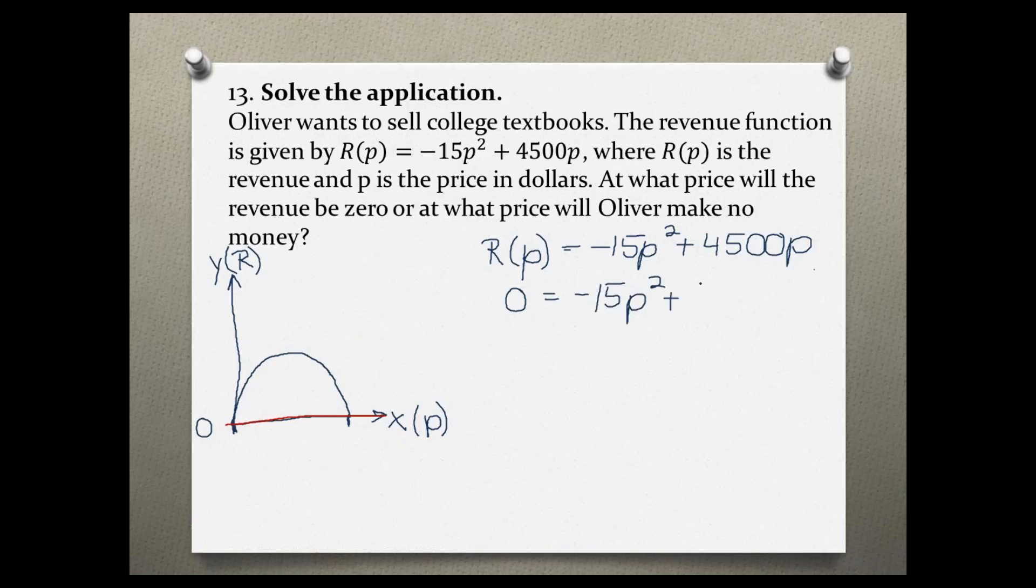So by doing this, you might notice that we can factor the right side. Both of these terms share a common factor of negative 15p, so let's pull out negative 15 and they also share a p. Negative 15p would be our greatest common factor, and then we are left with p minus 300.